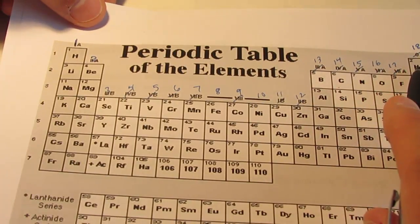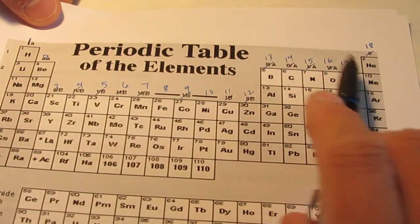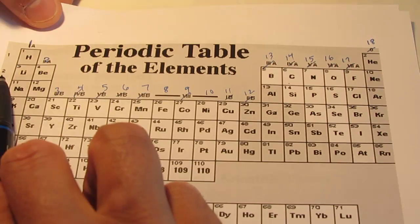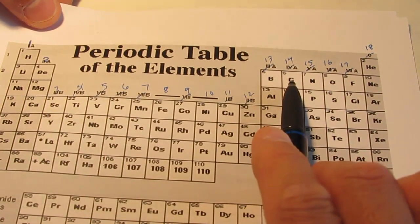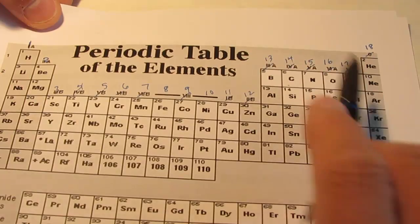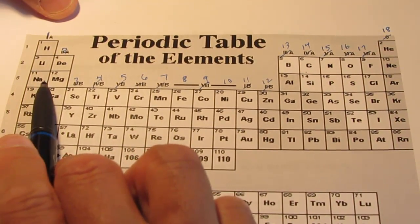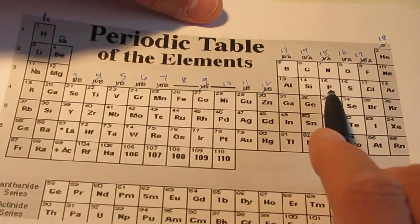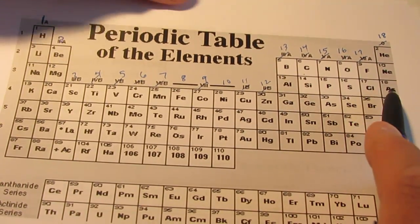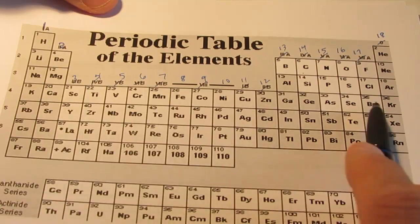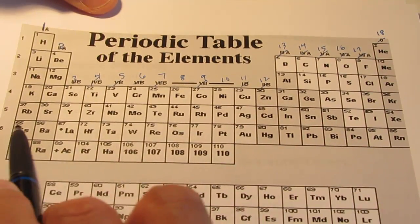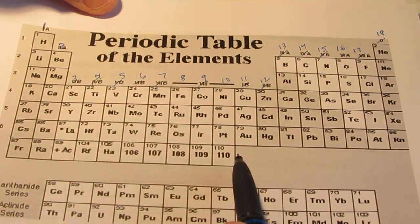and all the way across here to the element helium. Then we have the second period with lithium, beryllium, boron, carbon, nitrogen, oxygen, fluorine, and neon. The third period, which consists of sodium, magnesium, aluminum, silicon, phosphorus, sulfur, chlorine, argon. Then there's the fourth, the fifth, the sixth, and the seventh periods.